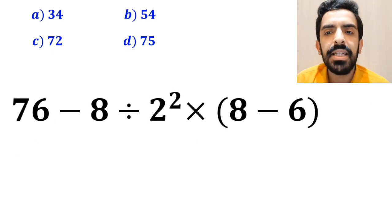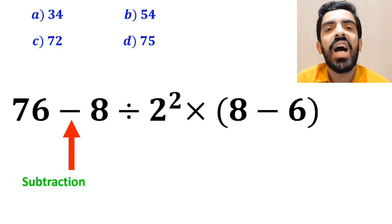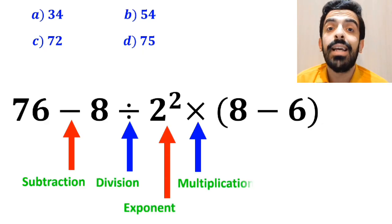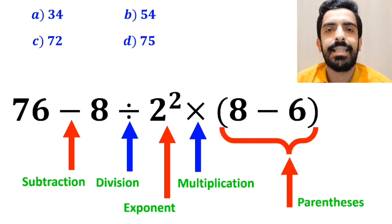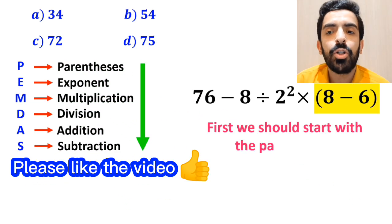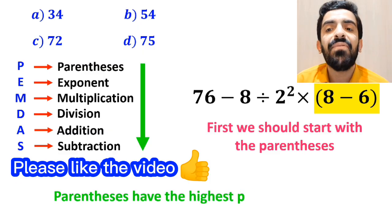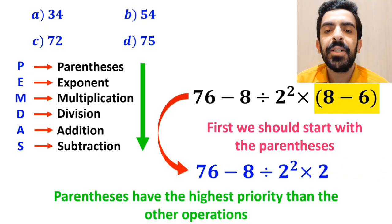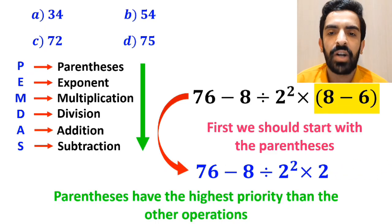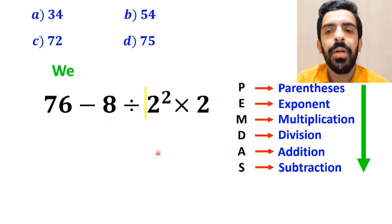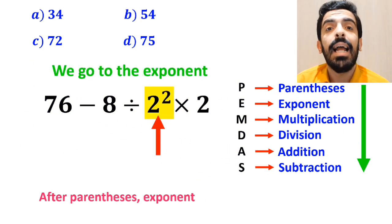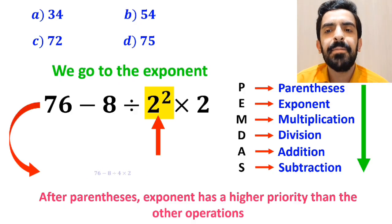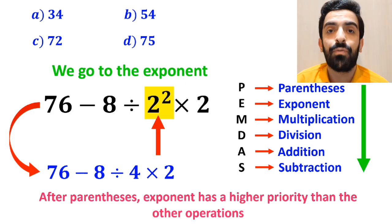As you can see on the screen, in this expression, first we have a subtraction sign, then a division sign, then an exponent, then a multiplication, and finally parentheses. According to the PEMDAS rule, we should start with the parentheses because they have the highest priority. So we rewrite this expression as 76 minus 8 divided by 2 to the power of 2, times 2. In the next step, we go to the exponent, which gives us 76 minus 8 divided by 4, times 2.